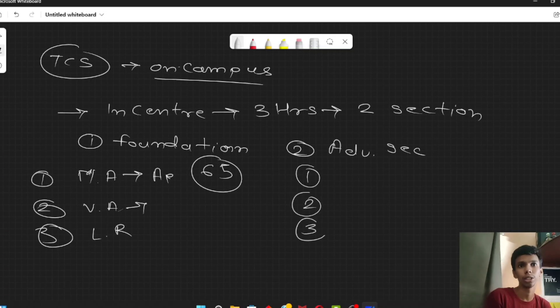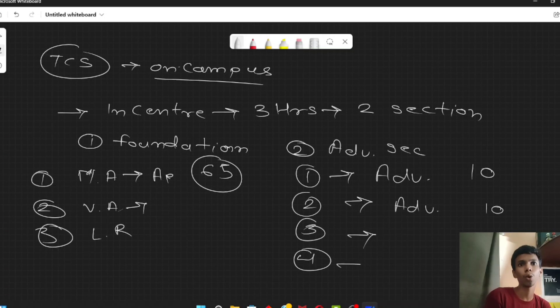After that, there were 4 sections. The first section was advanced quantitative with 10 questions. The second section was advanced reasoning with 10 questions. After that, there were 2 coding questions, Coding 1 and Coding 2. There were 4 subparts.